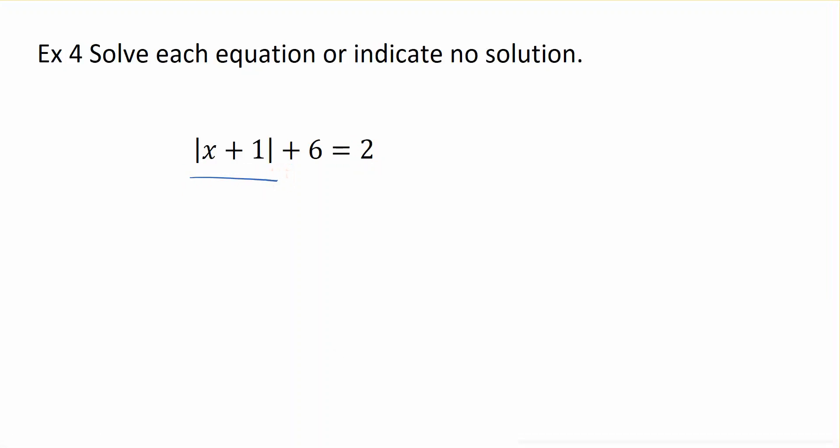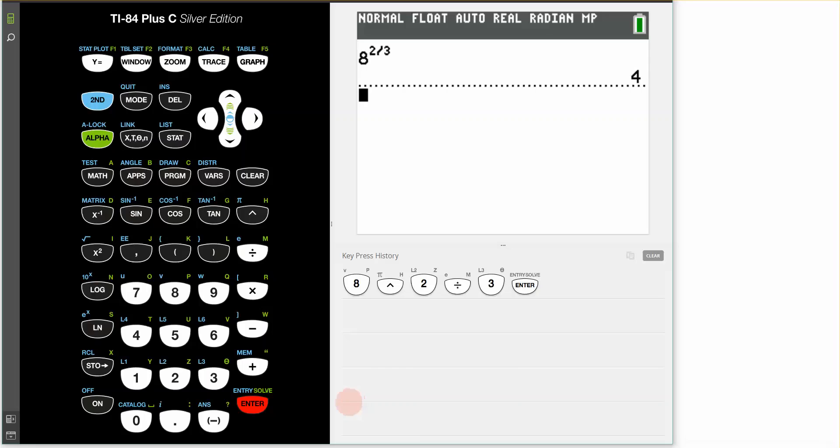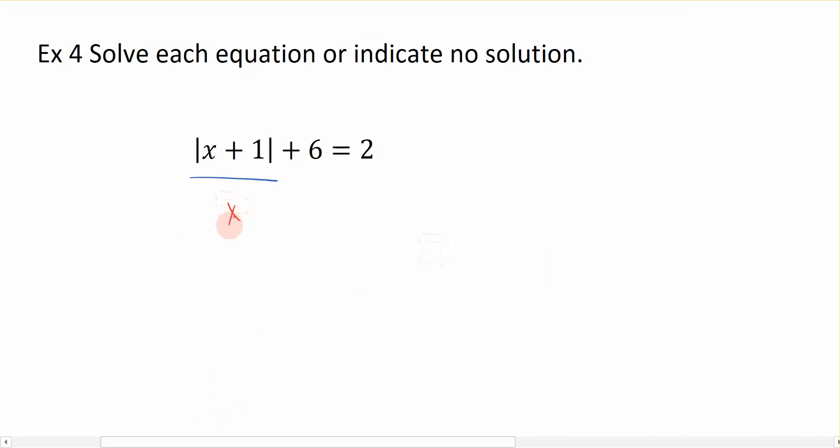So if I want to get x plus 1 by itself, I'm going to subtract 6 to the right-hand side. So I get x plus 1 still in between the absolute value bars is equal to, when I subtract 6 to the other side, I get negative 4.